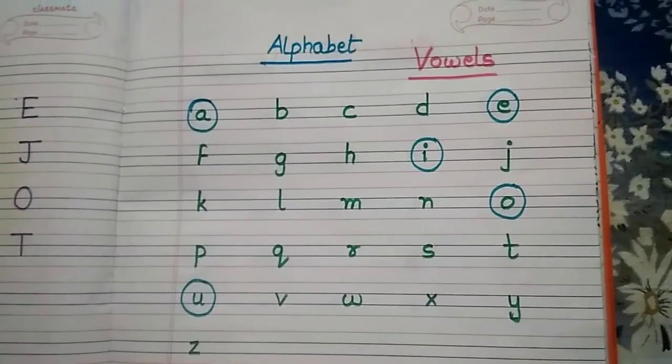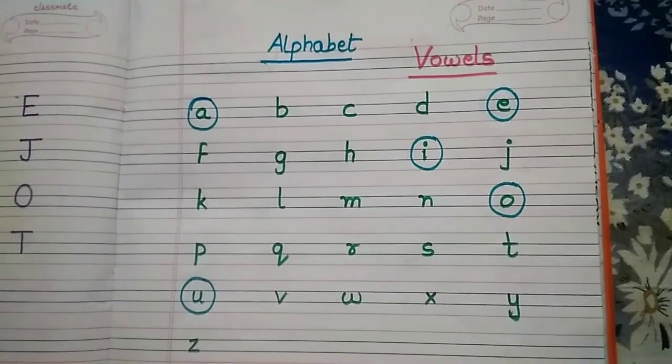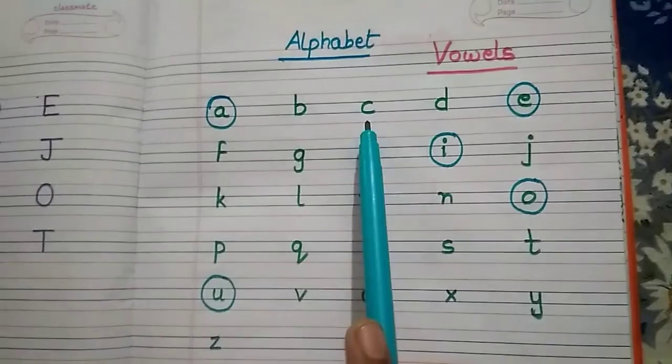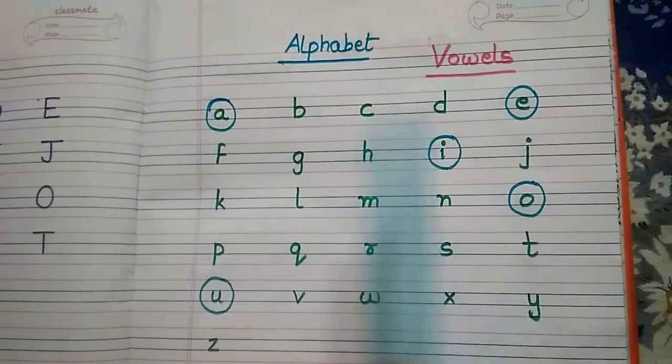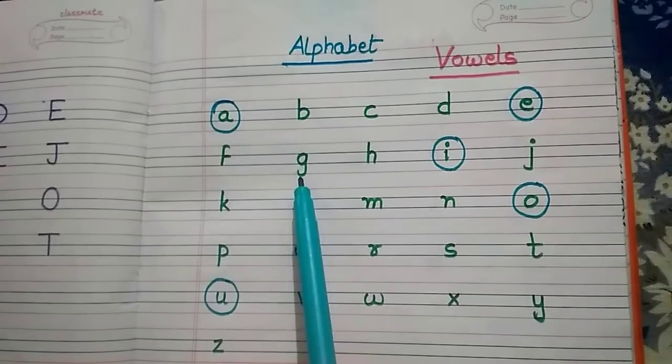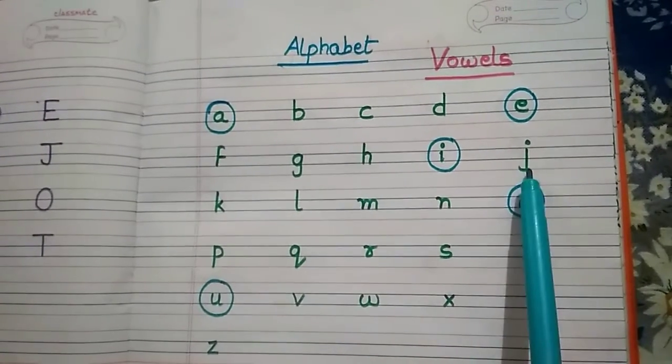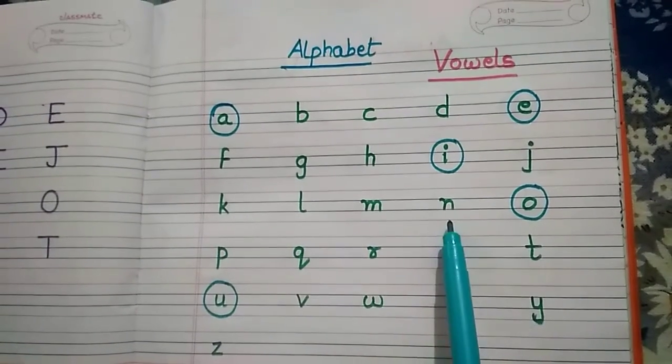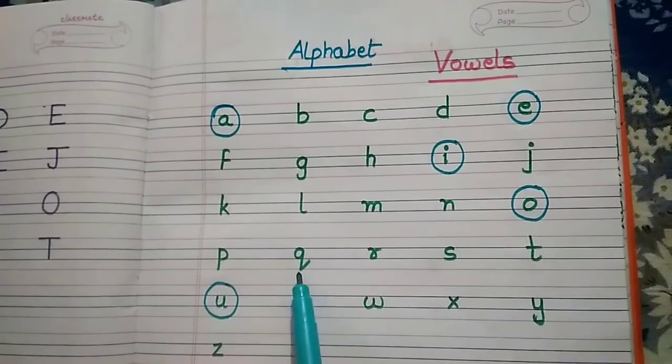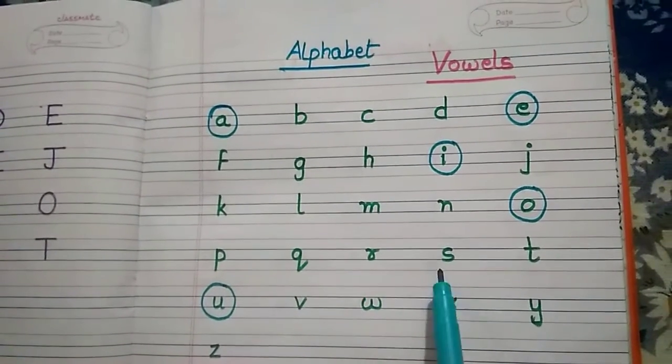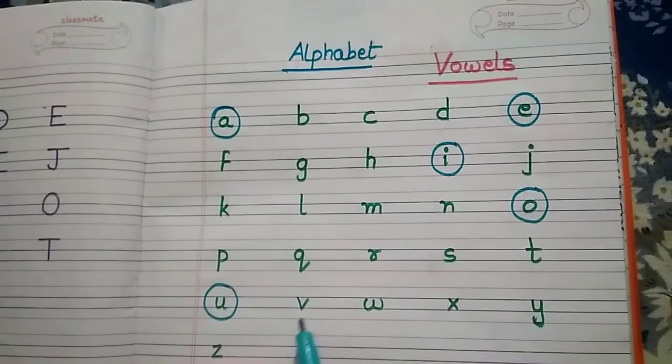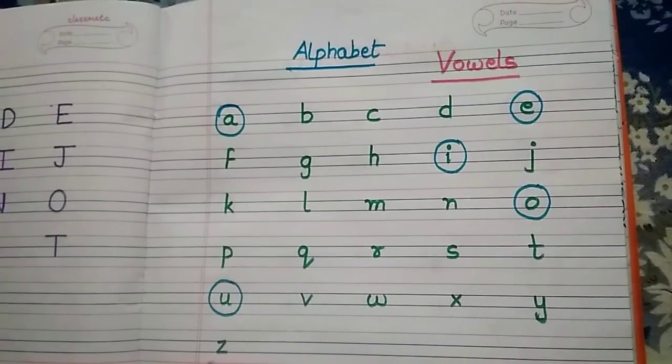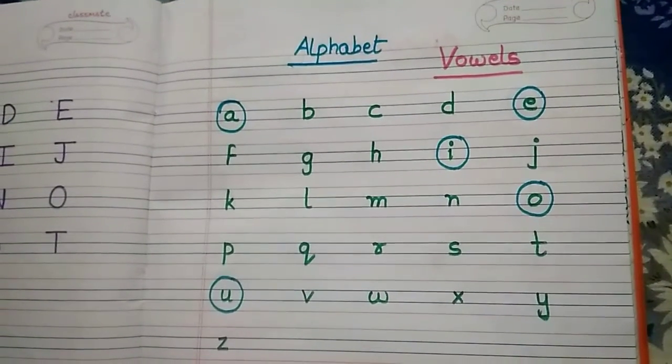And the remaining letters are called consonants. Let's see those also. These are consonants: b, c, d, f, g, h, j, k, l, m, n, p, q, r, s, t, v, w, x, y, and z. These are the consonants.